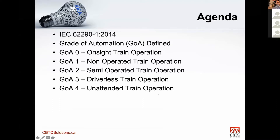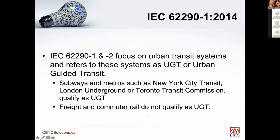For today's agenda, we're going to be talking about the grades of automation. This is based on the CENELEC standard 62290-1, and we'll also be covering dash 2 slightly. This standard is what defines the grade of automation, and in there they've defined the levels: GoA 0, 1, 2, 3, and 4, and the various levels that are defined in that standard. I'll be going through each one of these levels in this presentation.